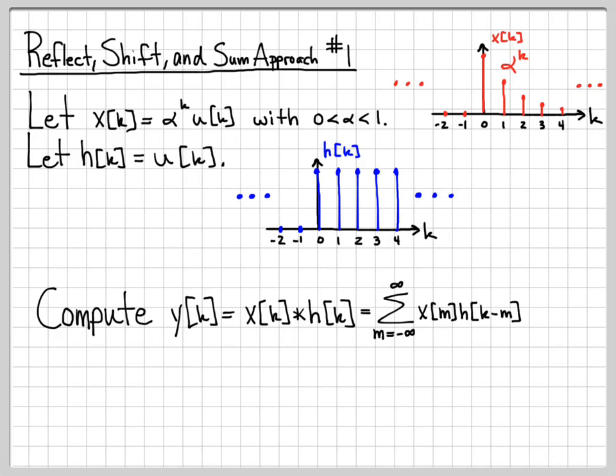We need a more general approach to doing this. The key to doing it involves being able to sketch what does x[m] look like and being able to sketch h[k-m]. What does h[k-m] look like? If we can understand what those two pieces look like for different values of k, then we can actually get closed form answers for this summation often.